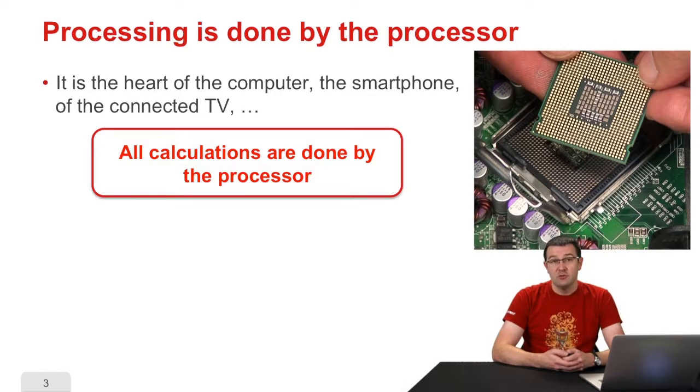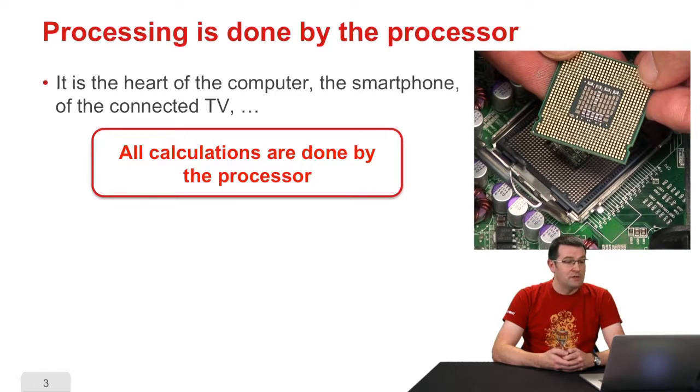You can find processors in all modern objects carrying some kind of computing capacity, like computers, smartphones, televisions, etc.